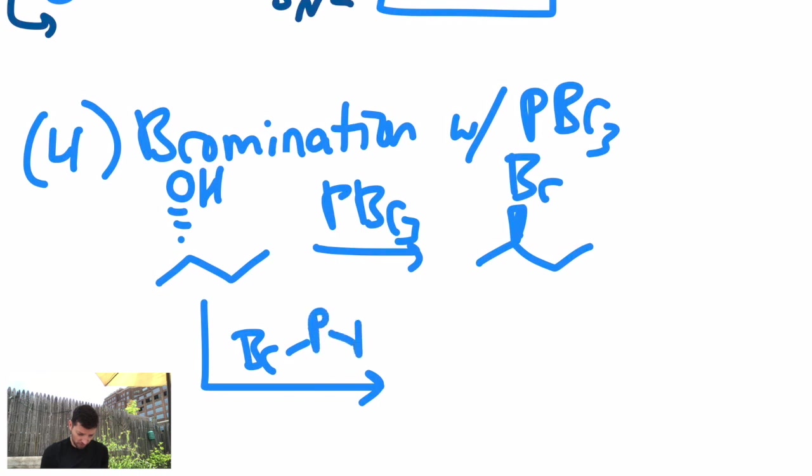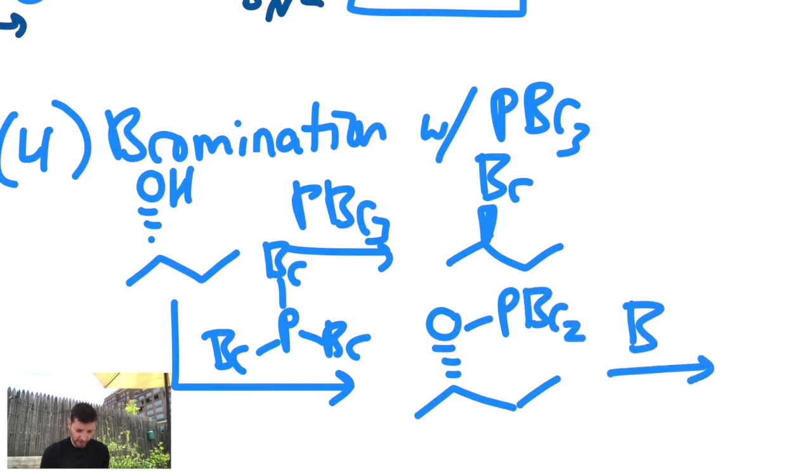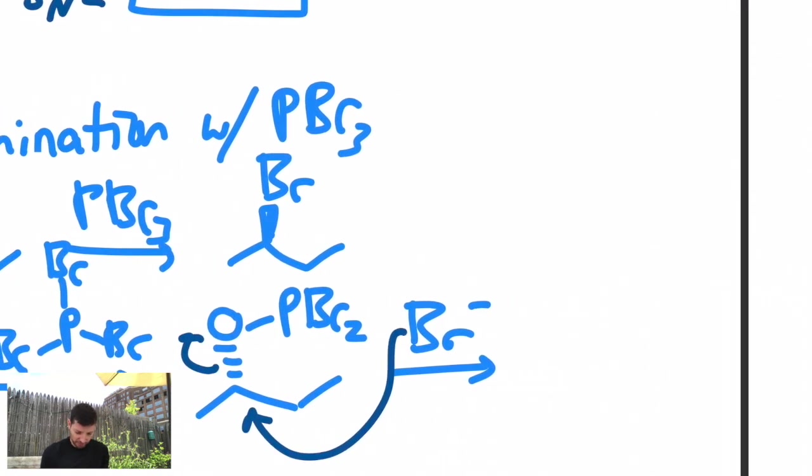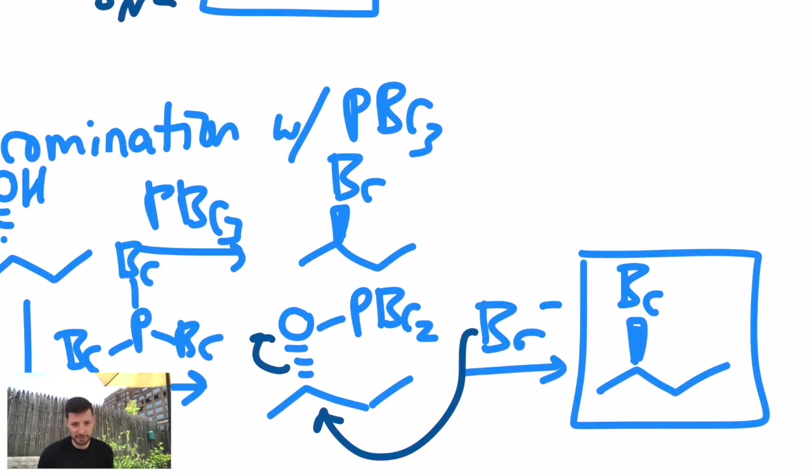The alcohol attacks the phosphorus with three bromines attached to it. You have a new oxygen-phosphorus bond. And then a bromide does an SN2, similar to that last part of the thionyl chloride mechanism a moment ago, but that's why we get inversion of stereochemistry. Which only matters if it's on the secondary with an asymmetric carbon.